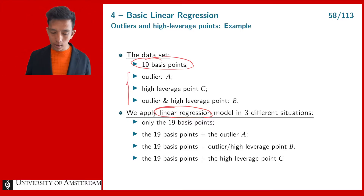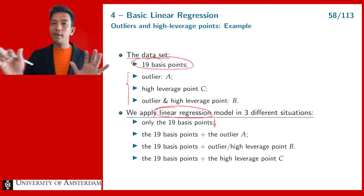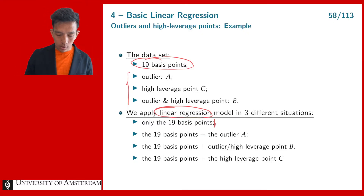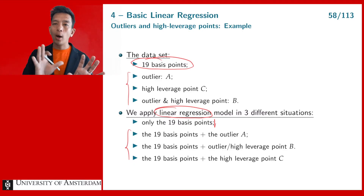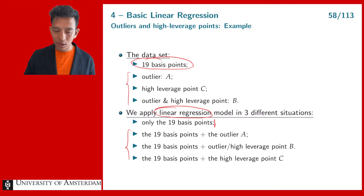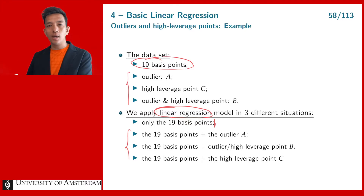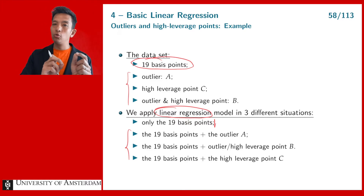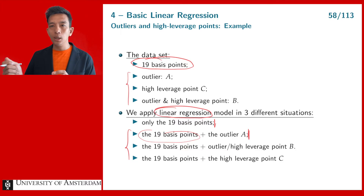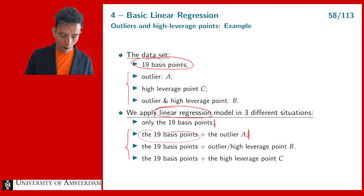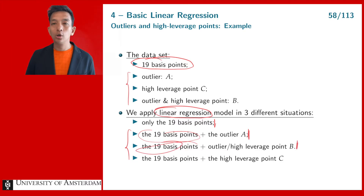Specifically, we first fit a linear regression model without any extreme observations. Then we fit three additional linear models, each time adding one extreme observation: the 19 base points plus outlier A; the 19 base points plus observation B; and the 19 base points plus high leverage point C. This lets us see the individual effect of each extreme observation.